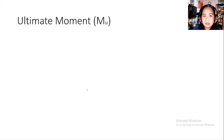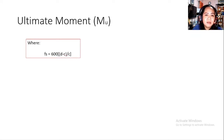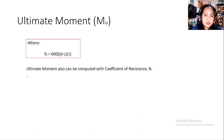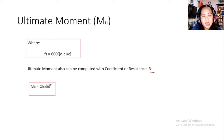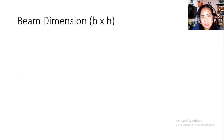From the formula: Fs = 600 × (D − C) / C. The ultimate moment can also be computed using the coefficient of resistance Rn: Mu = φ × Rn × B × D², where Rn = f'c × ω × (1 − 0.59ω), and ω = ρ × Fy / f'c.